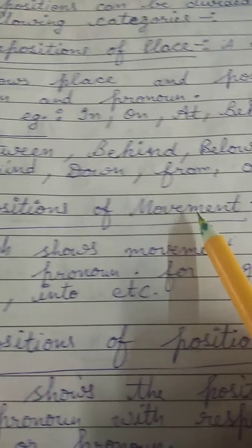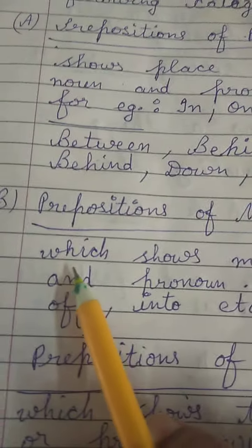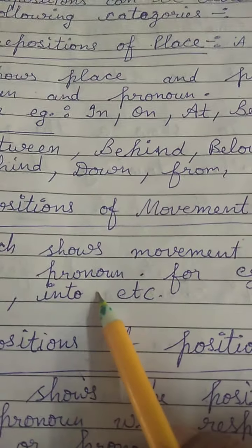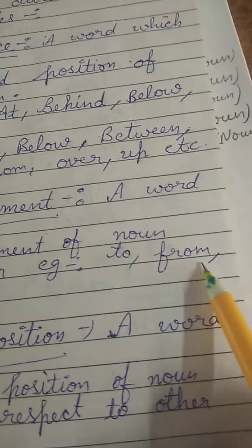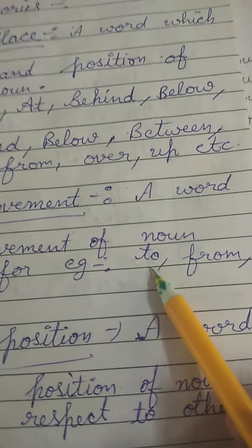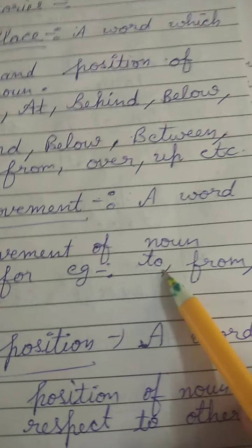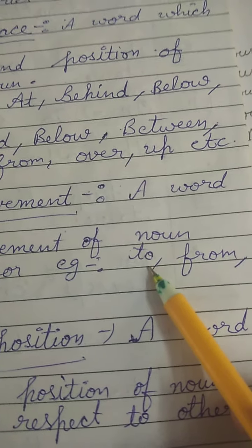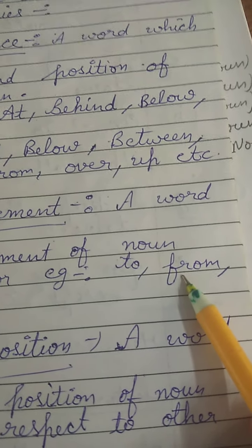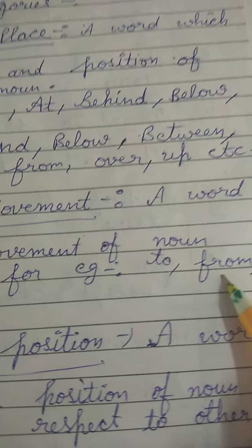Next is a preposition of movement. Movement means it shows the movement of one object — a word which shows movement of a noun. For example, the preposition 'to': I am going to Delhi. Ram is going to Delhi, so Ram is a noun and it is showing the movement of Ram. Ram is going from Delhi to Rohtak — here 'from' is the preposition used to show movement.